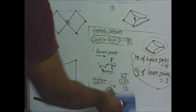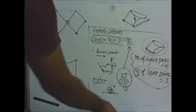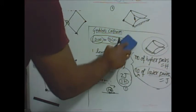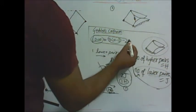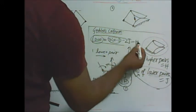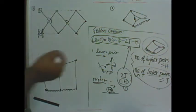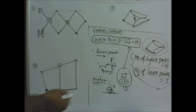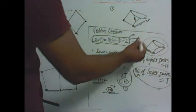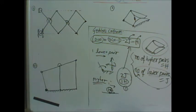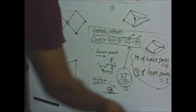Substituting these into the formula, the degree of freedom for a given planar mechanism is: F = 3(n − 1) − 2j − h. This is the Grübler's formula for degree of freedom of planar mechanisms, where j is the number of lower pairs and h is the number of higher pairs.